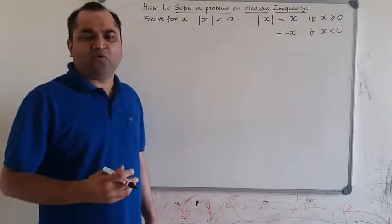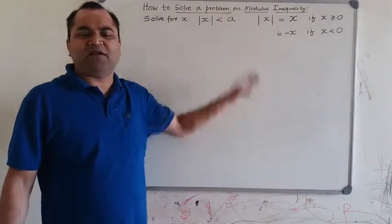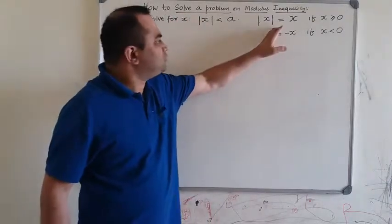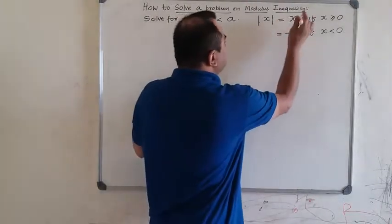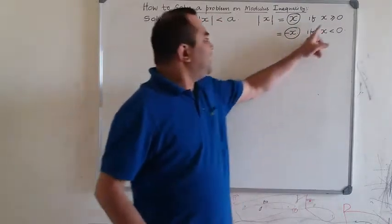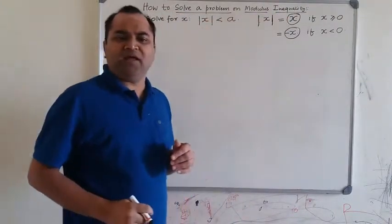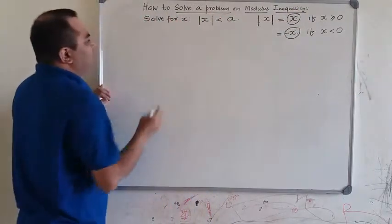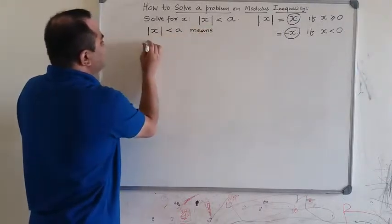If you have not watched our video on absolute value or modulus, please do that first so that this definition you will understand better. I will make use of this definition in solving this inequality question. Mod X is expanded as plus X and minus X depending on the value of the number inside the mod symbol — the bar symbols used for denoting absolute value or modulus.